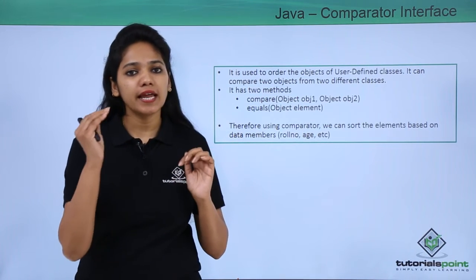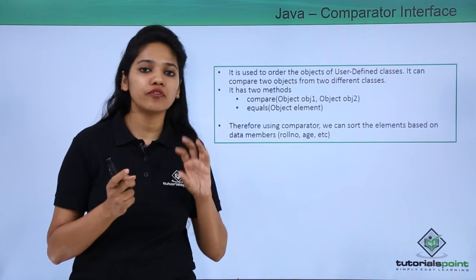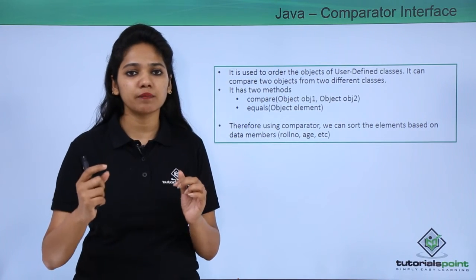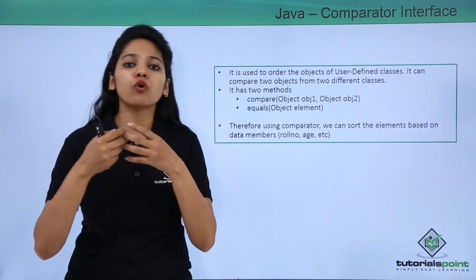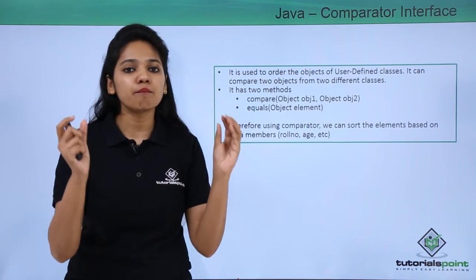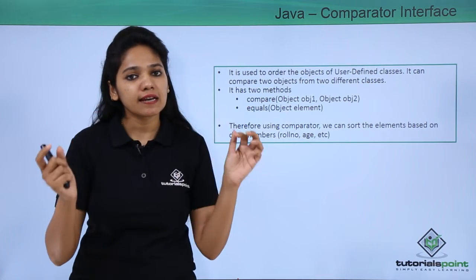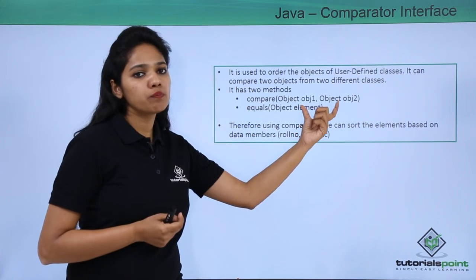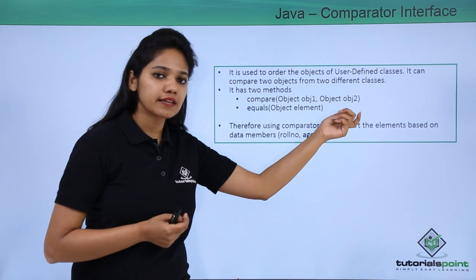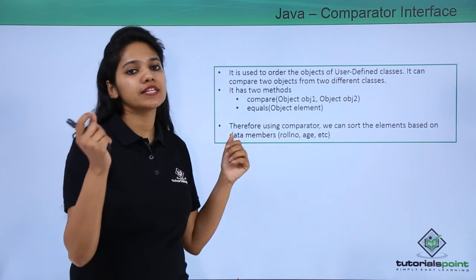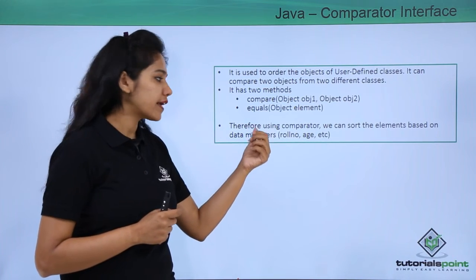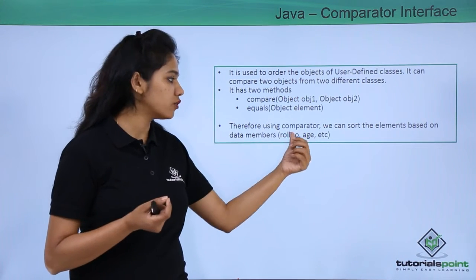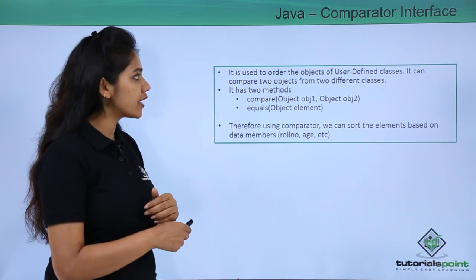For example, you have created two classes — class 1 and class 2 — and you have defined certain variables in each. You want the output printed in ascending or descending order by comparing the objects of both classes. In those cases, you use comparator. It allows you to sort elements based on data members such as role number, age, and so on.